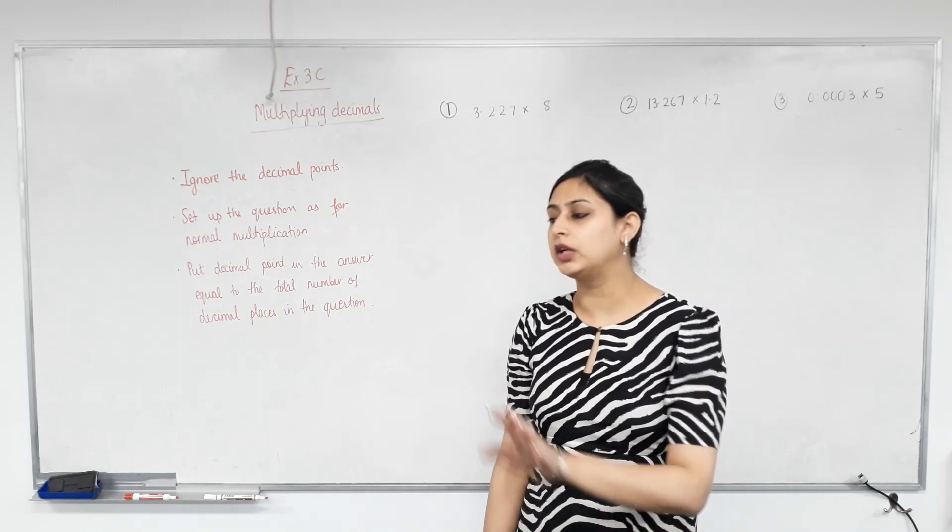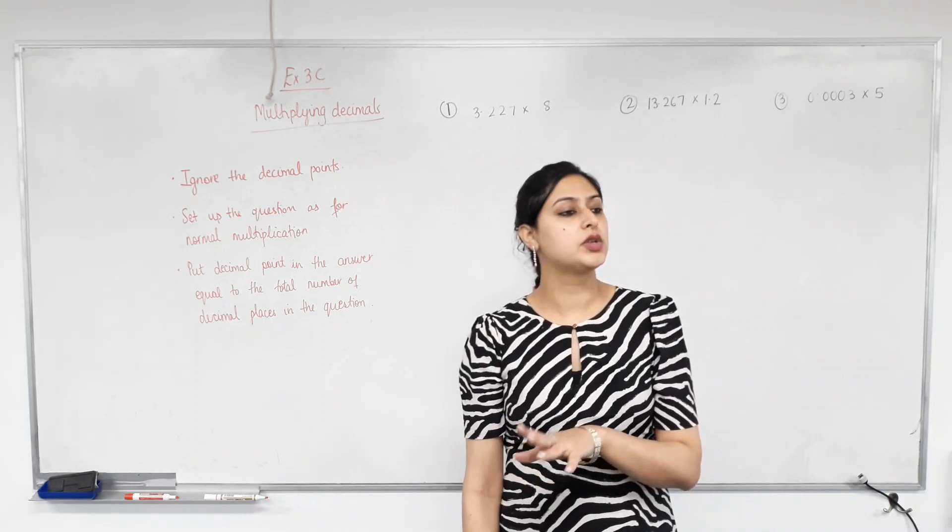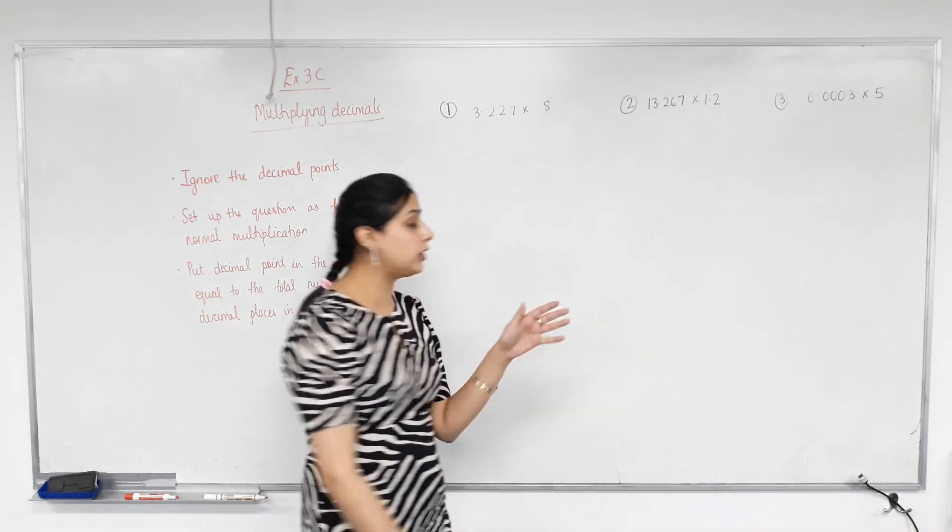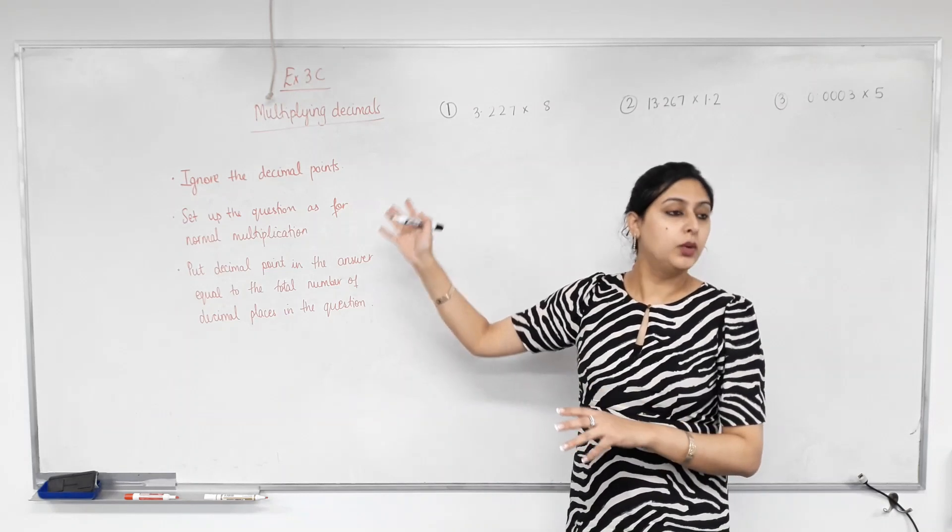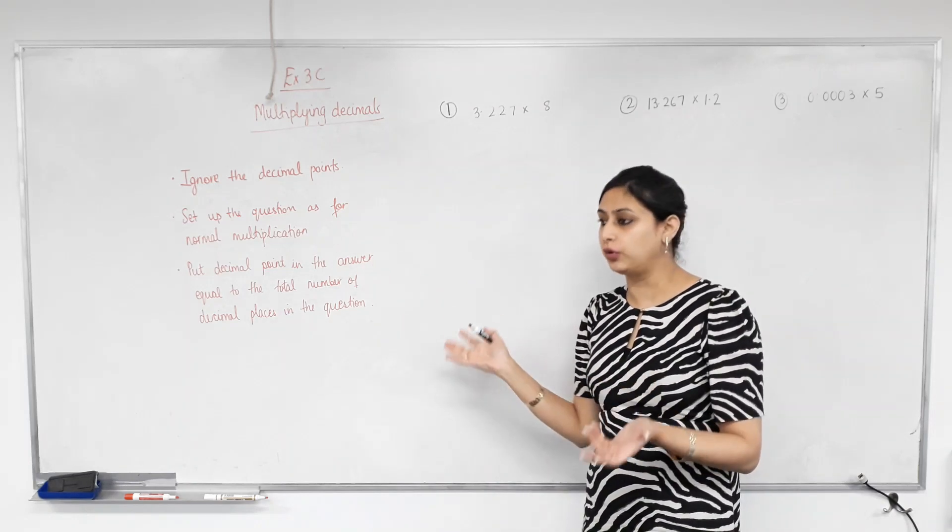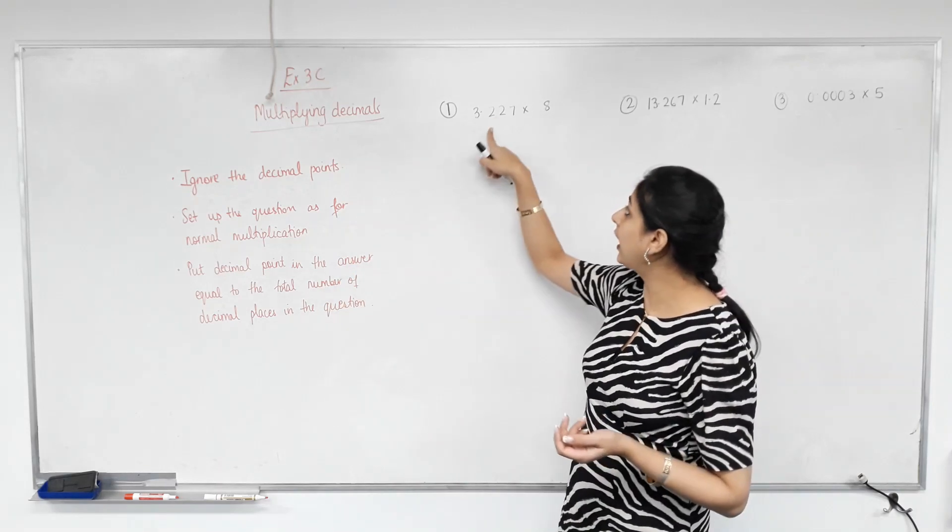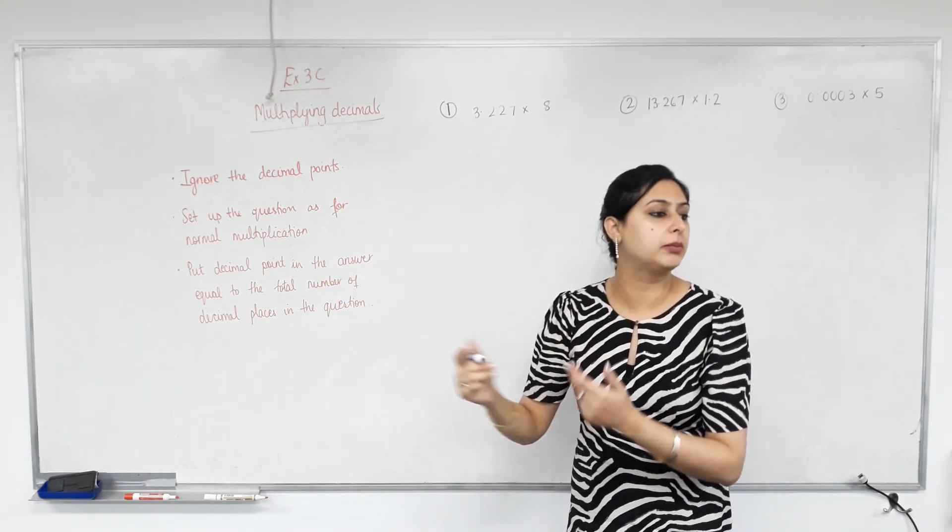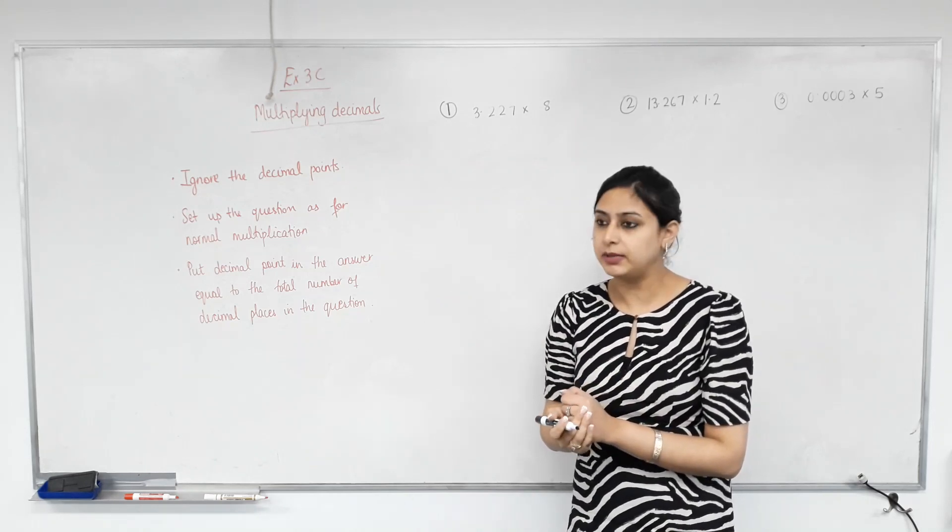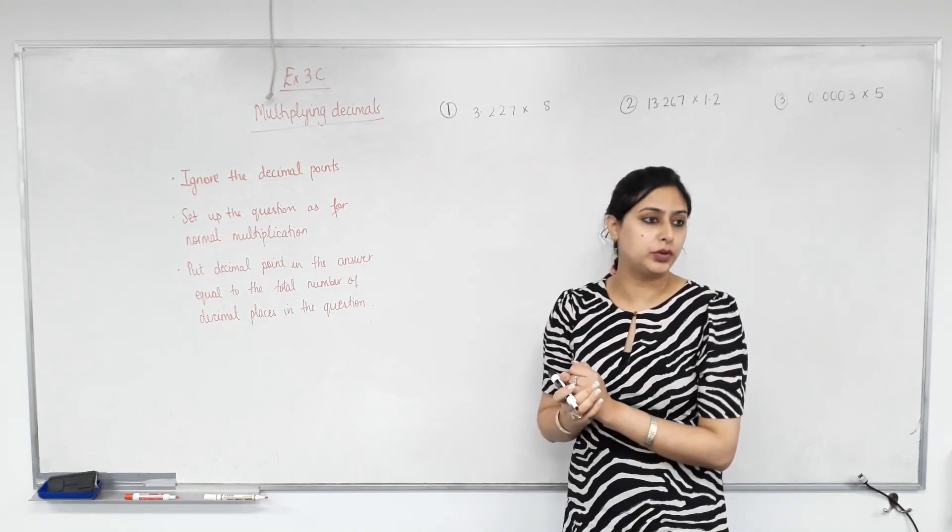You don't have to worry about including decimals in the question, so it's very easy. What we do is we ignore the decimal points to begin with, we set up our question like for a normal multiplication, and then we count how many decimal places were in the question. The answer will have the same number of decimal places. Does that make sense? It will be clearer when we do the questions.